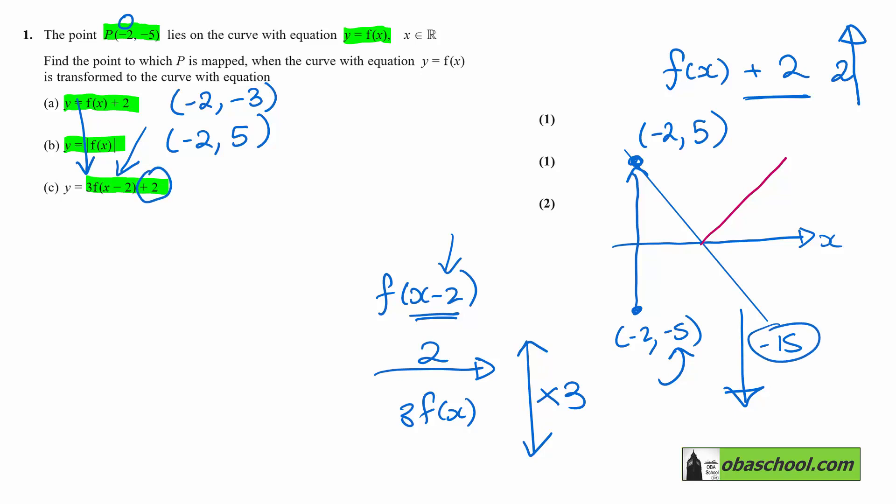The +2 will have the same effect then as it did in part (a), and move it back up 2 units to -13. So this one is going to be at (0, -13).